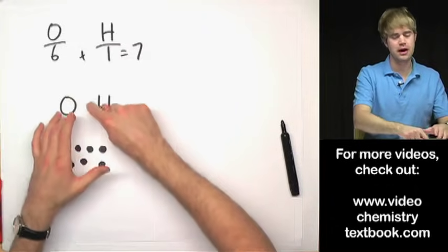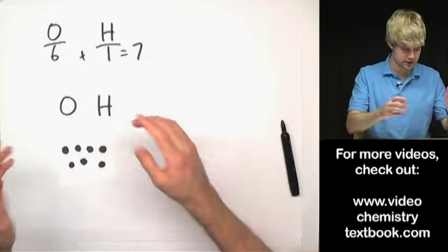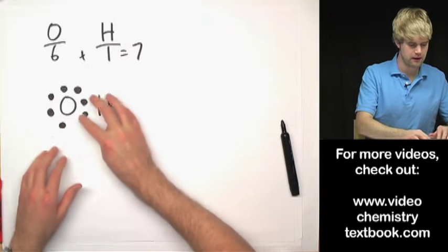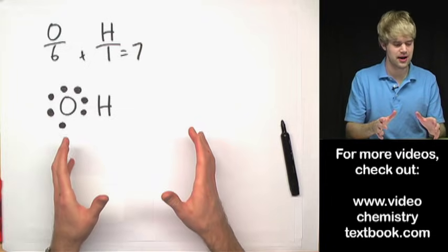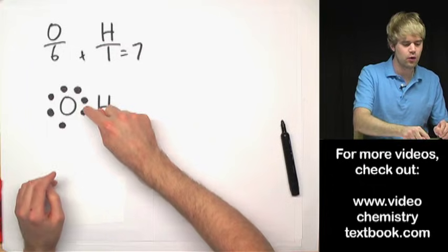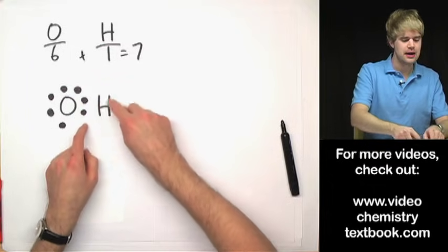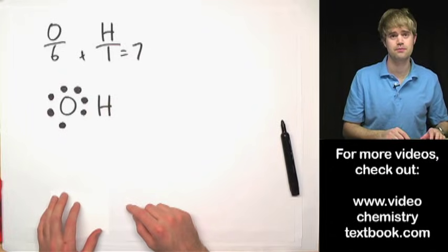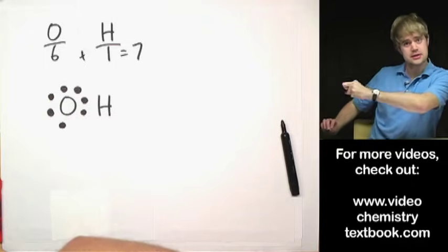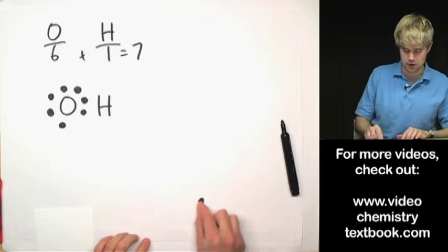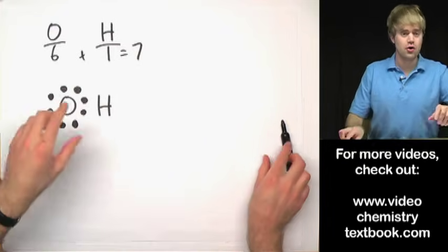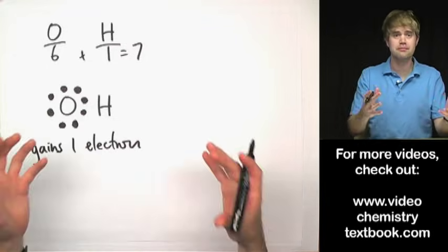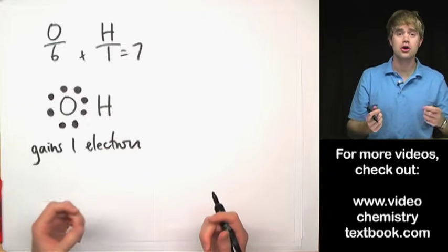Oxygen wants to have eight electrons but hydrogen is happy with only two valence electrons in its outer shell. So I put a couple around oxygen, put two here for hydrogen to share — but this is a problem, because oxygen wants eight but it only has seven here. Hydrogen is happy with its two, but oxygen wants one more and there are only seven total electrons to distribute between these two atoms. Well, this oxygen and hydrogen pair can steal an electron from somewhere else — and that's exactly what they do. They pull in an electron from elsewhere, gaining one electron.